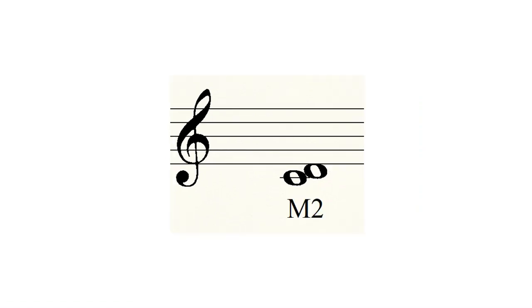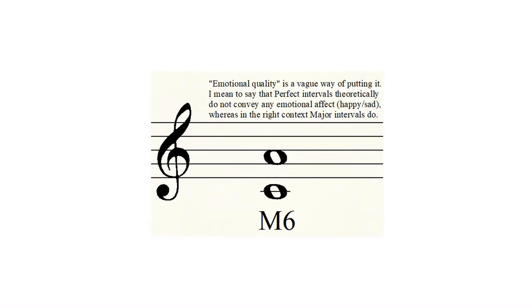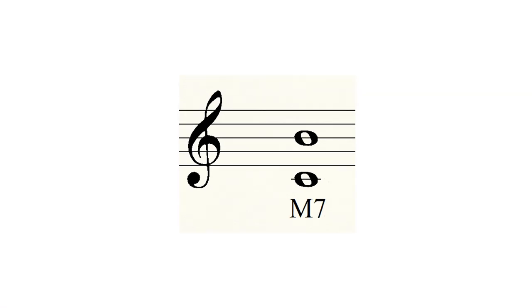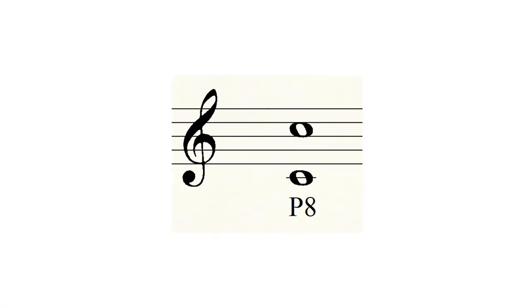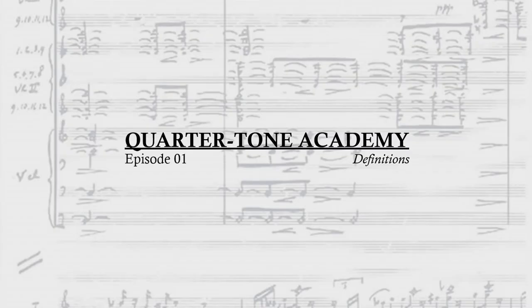C to D is two semitones apart and is called a major second, notated as capital M2. C to E is four semitones apart, called a major third. Next we have C to F, another perfect interval, so a perfect fourth or P4. C to G is a perfect fifth. C to A does have an emotional quality to it—that's kind of an odd way of putting it—we would call it a major sixth or M6 with capital M. C to B is called a major seventh. Finally, C to C an octave higher is called a perfect octave or P8.